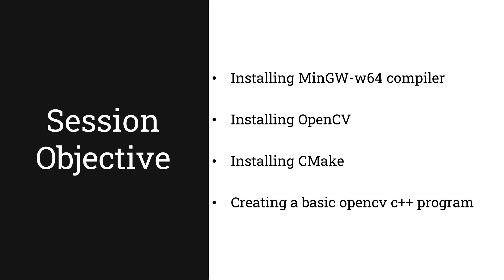Finally, we will be creating a basic OpenCV C++ program and running it with the help of CMake and MinGW compiler. Our main objective is to not depend on any IDE like Visual Studio and be able to write our code in any text editor like Sublime or Notepad++ and simply run it with the command prompt. This approach for Windows is more similar to what you would do on Linux or Mac.